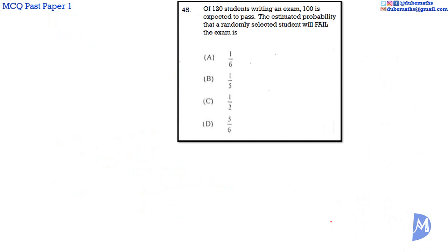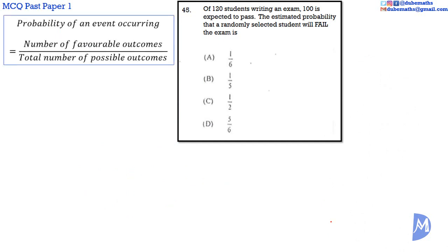Question 45. The probability of an event occurring is equal to the number of favorable outcomes over the total number of possible outcomes. Therefore, the probability of passing the exam is equal to the number of students expected to pass over the total number of students.